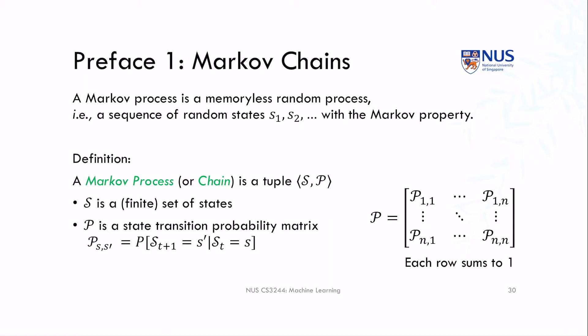The first step is to define what a Markov chain is. A Markov chain or Markov process is basically a memoryless random process — a sequence of random states that happen with a particular property called the Markov property. The Markov property states that we don't need any information about past states to model the present. So a Markov process or chain is basically a tuple of states and transition probabilities.